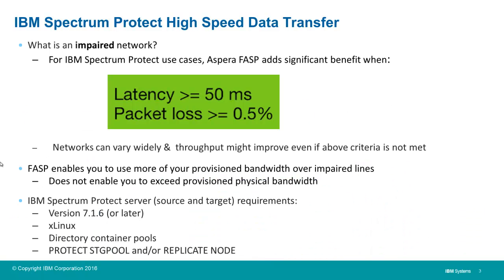You benefit from using FASP when you have an impaired network — categorized as a network with latency greater than or equal to 50 milliseconds and packet loss greater than 0.5%. Networks vary widely, so even if you don't meet these two criteria, you might still see improvements when doing Protect Storage Pools and node replications. FASP enables you to use more of your provisioned bandwidth over impaired lines, but it does not enable you to exceed provisioned physical bandwidth.